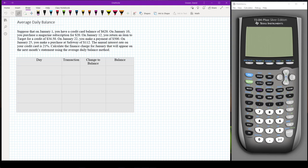So suppose that on January 1st you have a credit card balance of $620. On January 10th you purchase a magazine subscription for $20. On January 12th you return an item to Target for a credit of $34.50. On January 22nd you make a payment of $500. On January 25th you make a purchase at Safeway of $112. The annual interest rate on the credit card is 21%. Calculate the finance charge for January that will appear on next month's statement using the average daily balance method.